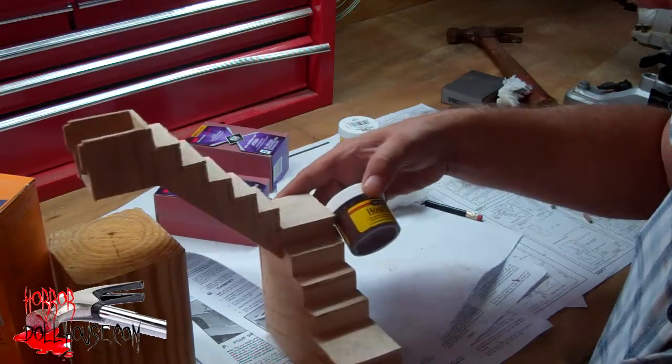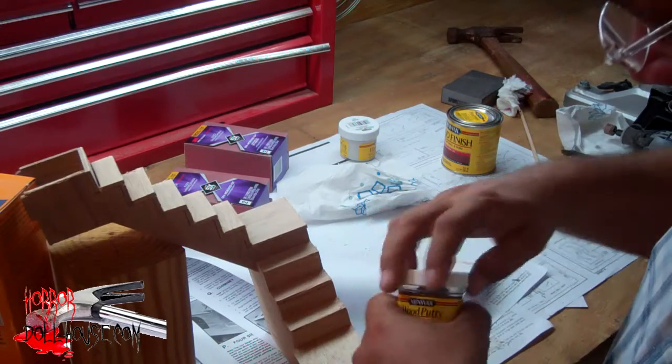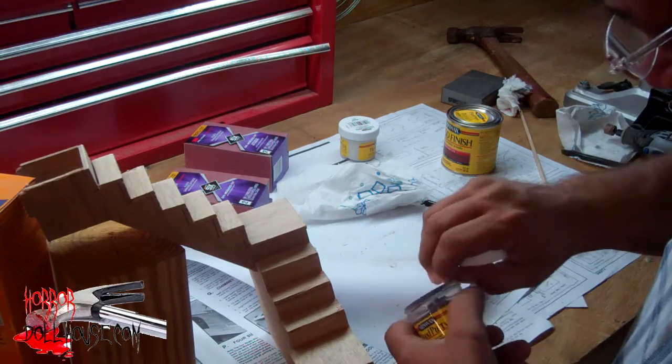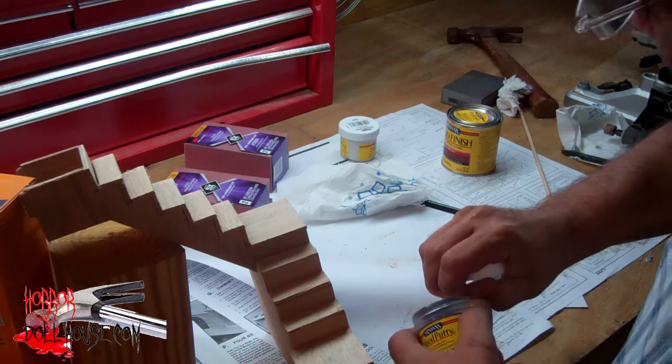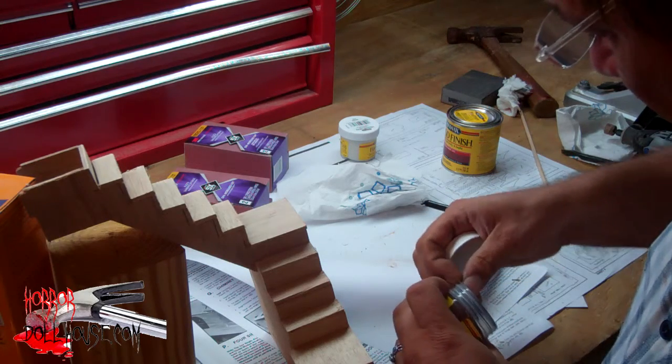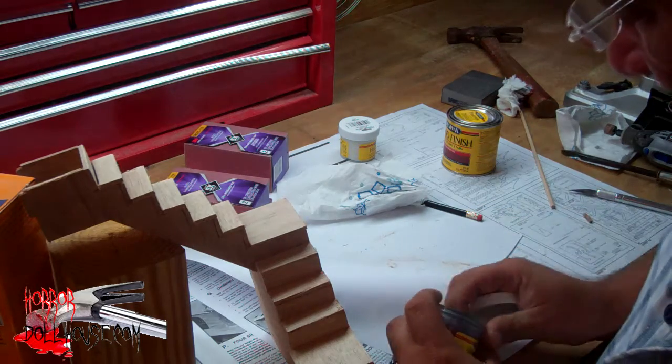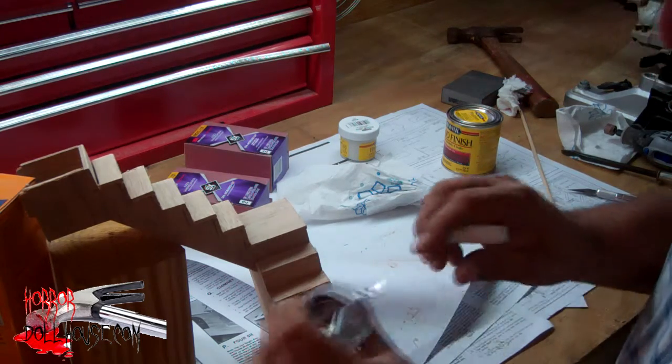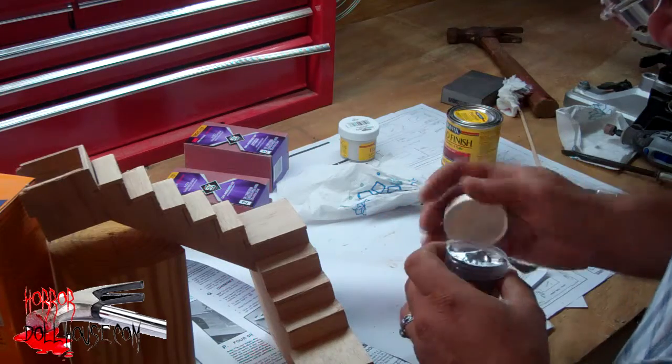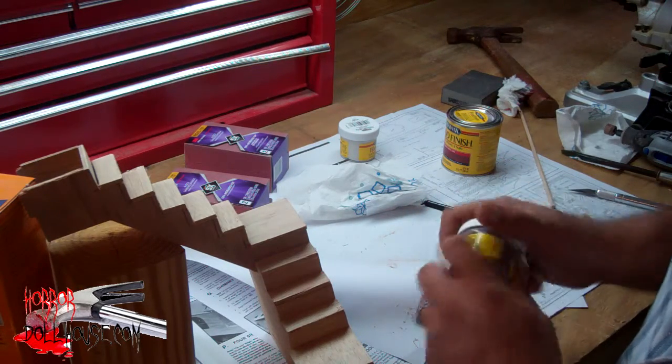I've got this Minwax wood putty. This is pretty close to that Sedona Red color. So that's why I got it. I'm going to fill these seams with this red. Then I'm going to stain over it after it dries.